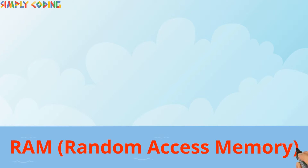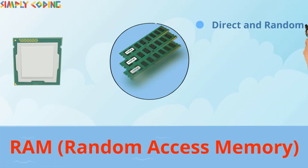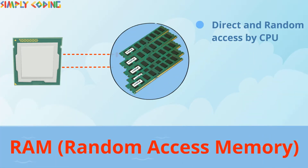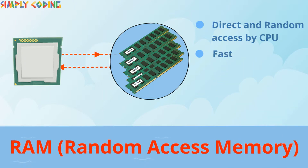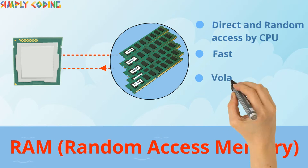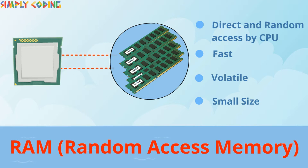RAM stands for Random Access Memory. The CPU can access randomly any part of the memory directly, making it very fast. Its content can be changed any time by the CPU. However, its contents are volatile, meaning all data is erased when the computer is powered off. Its size is typically a few GBs, hence there is always a need for additional storage.